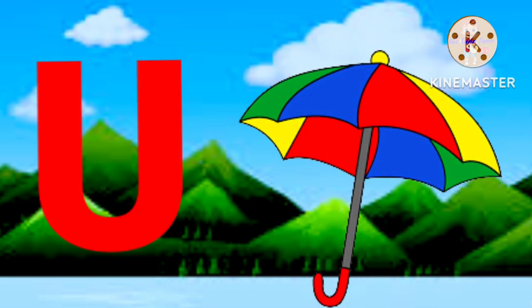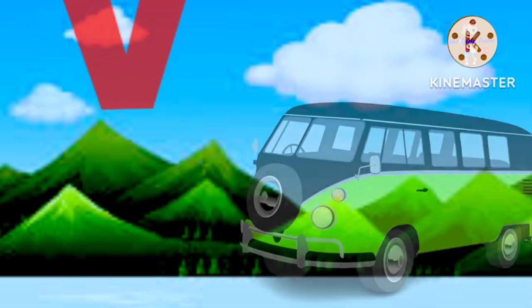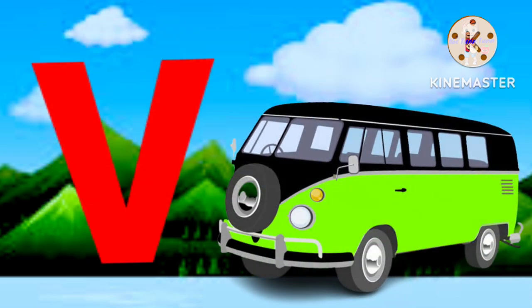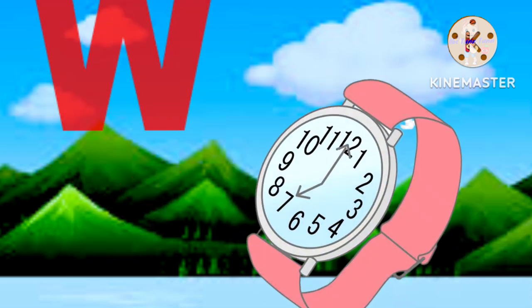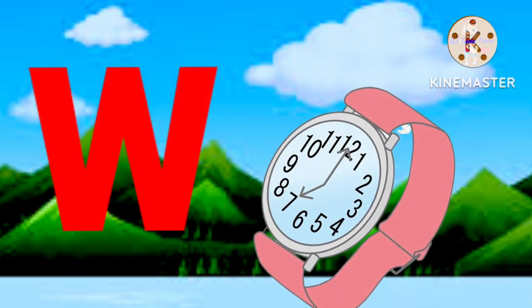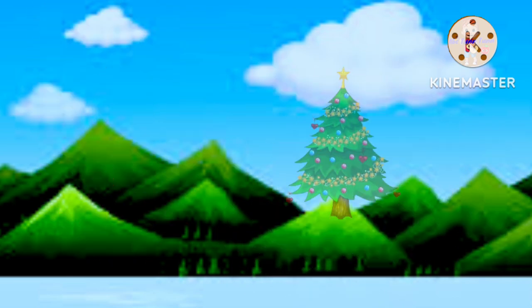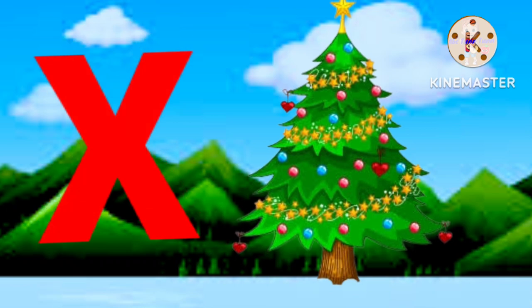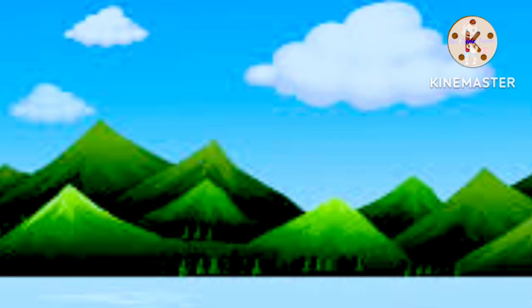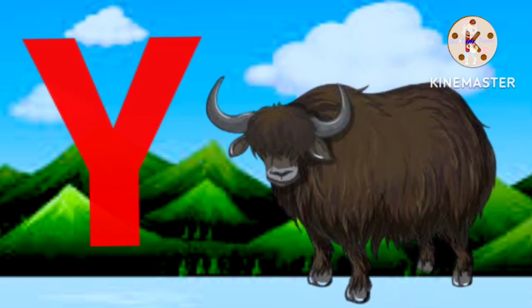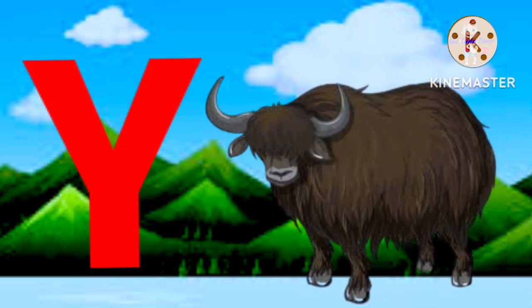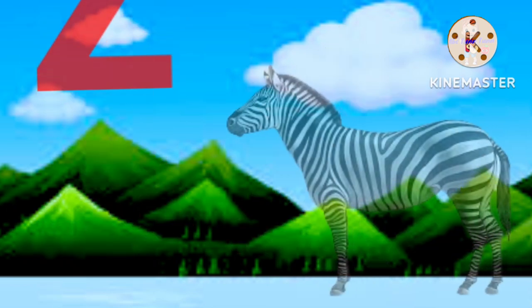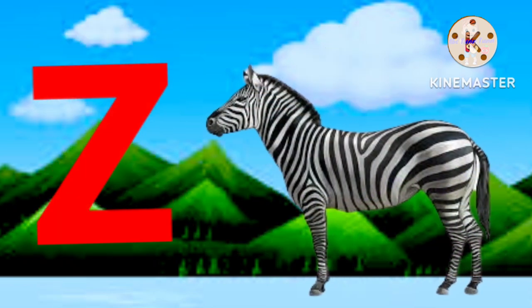U for umbrella, B for lamb, W for watch, X for atmosphere, Y for yak, Z for zebra.